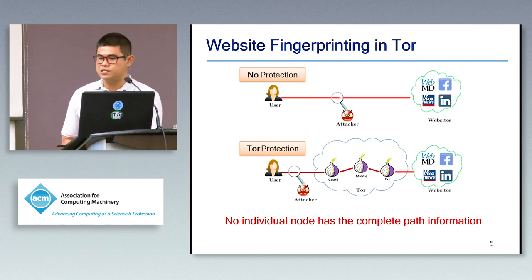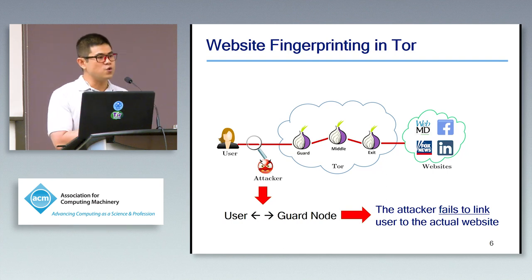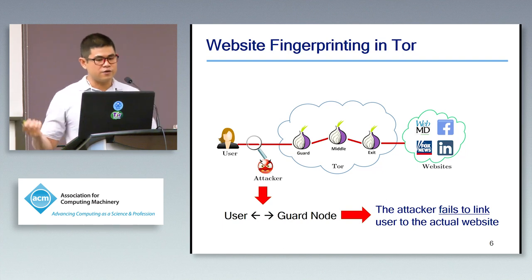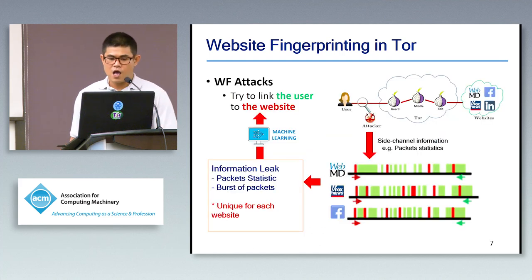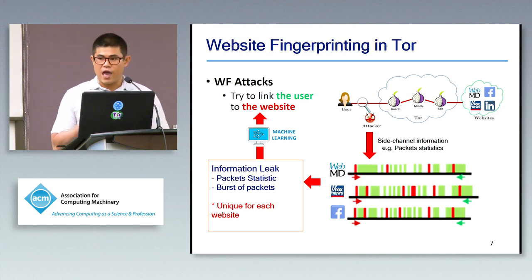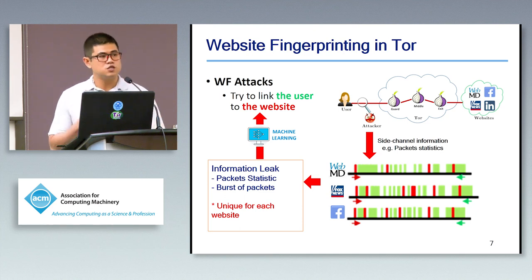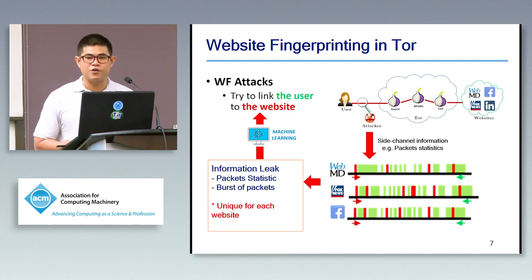With this design, Tor provides the compelling property in which each particular node only knows which node gave it data and which node it is giving data to. For example, if the attacker is monitoring the traffic between the user and the guard node, the attacker only knows who the user is and who the guard node is — and the guard node is not the actual website, so the attacker fails to learn user internet behavior. Unfortunately, the encrypted stream between user and guard nodes still leaks side-channel information such as packet statistics, which is unique for each website. This allows the attacker to train a machine learning classifier to predict the website the user may visit — and we call this exploitation a website fingerprinting attack.